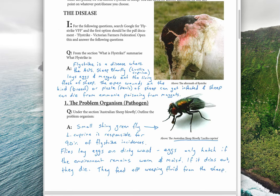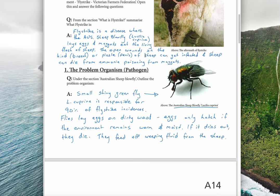There are folds of skin where the legs come in as well, and as the skin goes underneath, there are folds of skin which are warm. Moisture builds up and the flies like that as an environment. The problem organism is the Australian sheep blowfly — you really need to remember the Latin name Lucilia cuprina. If you can write L. cuprina to shorten it, that's fine.